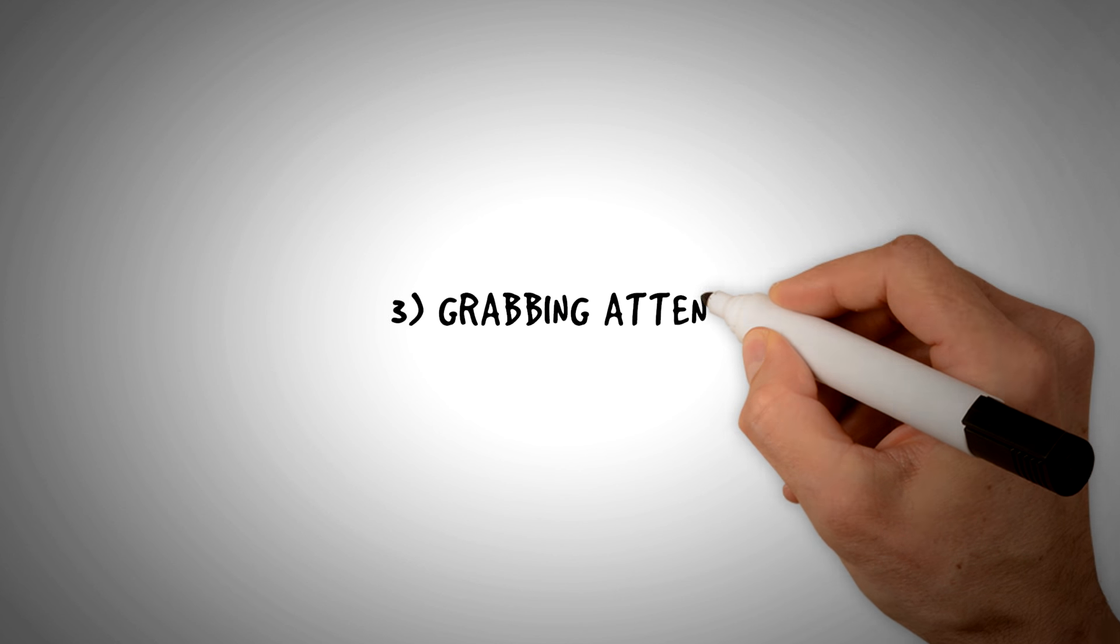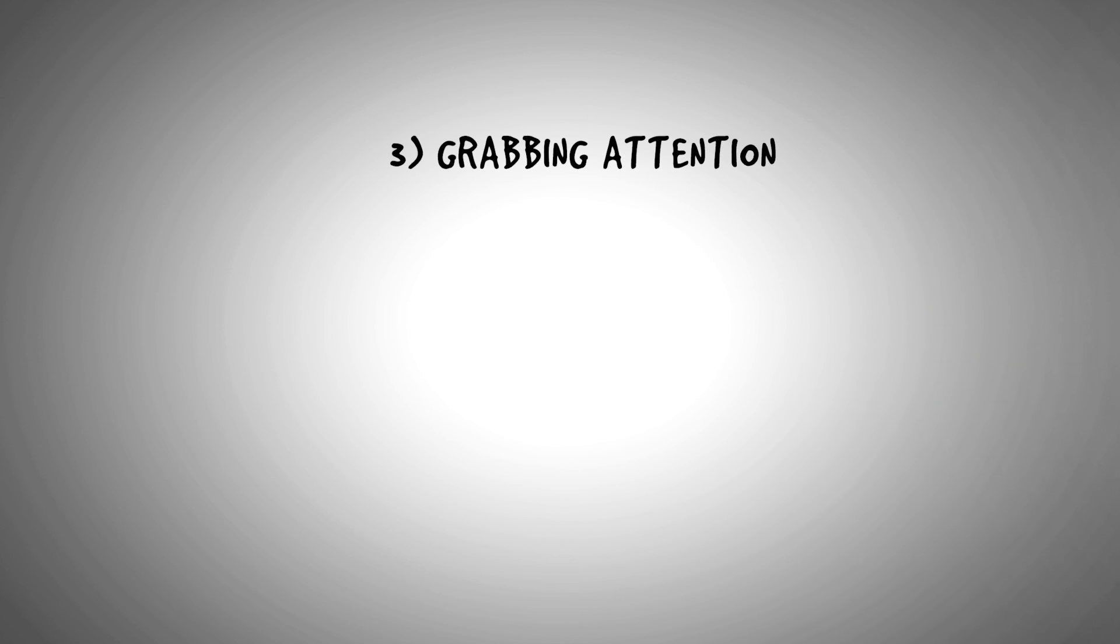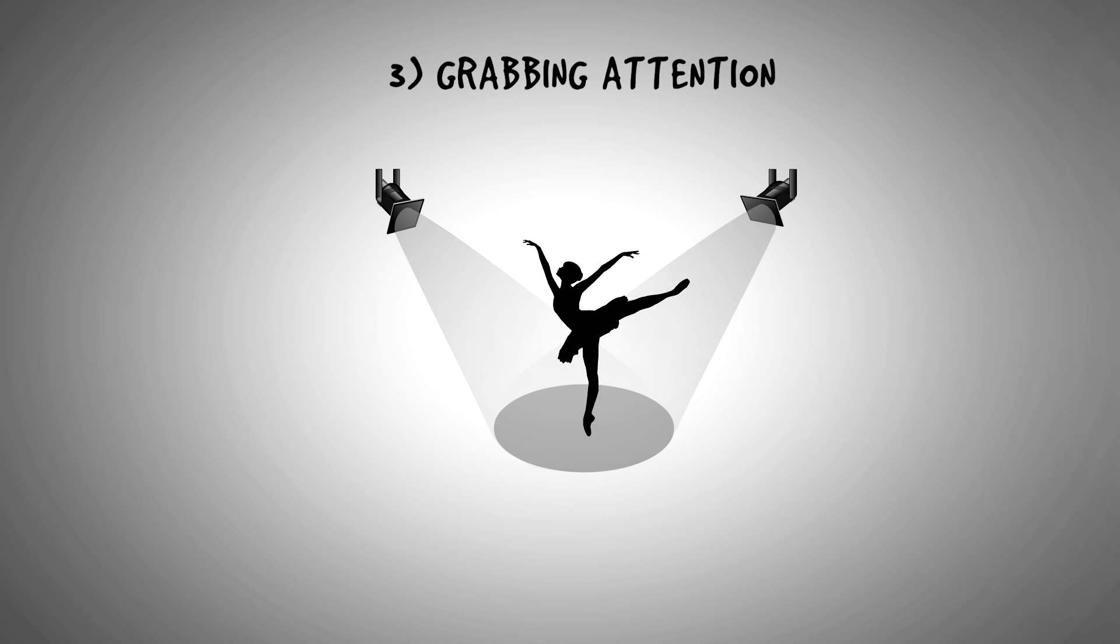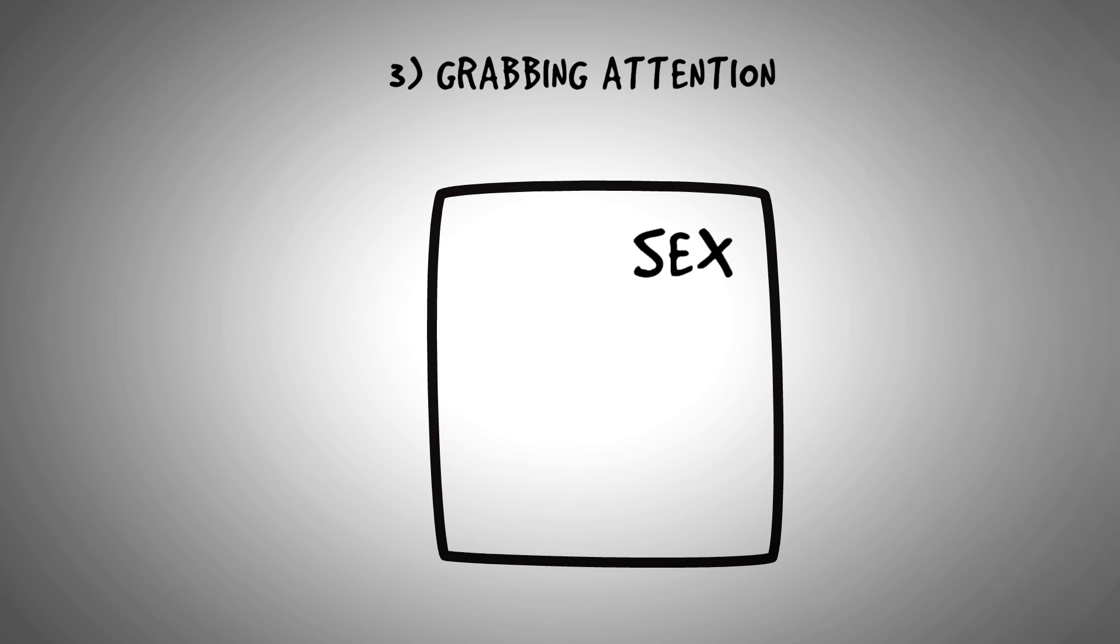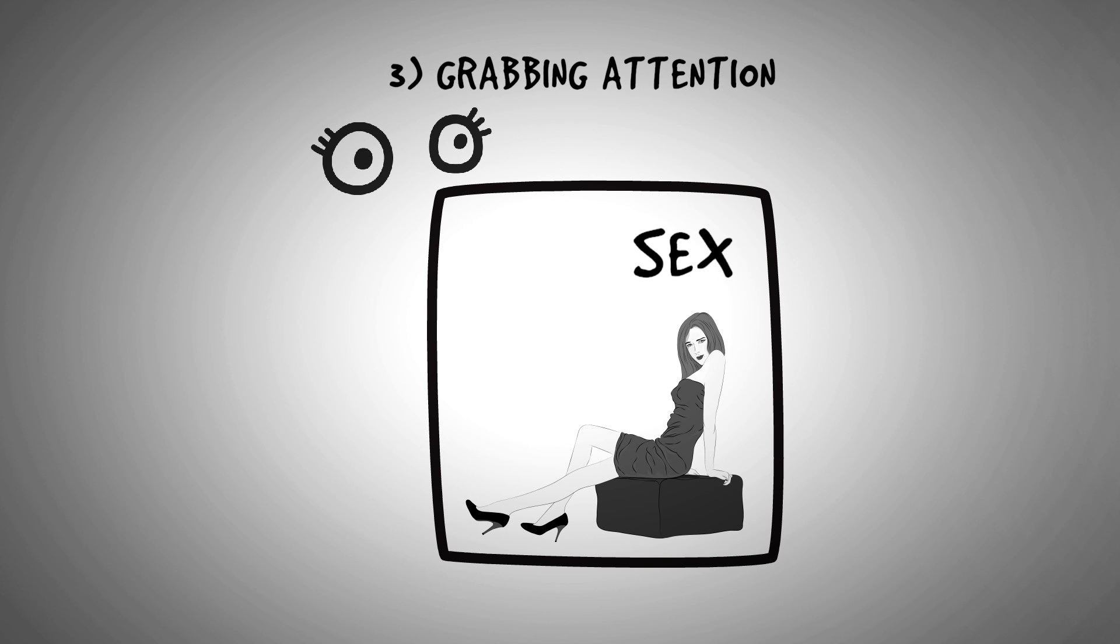Number three is grabbing attention. Before you can direct someone's attention, you first need to be able to grab it. And how do you do that? Using the time-tested attention grabbers of all time. Number one is sex. The main reason you see so many models on magazine covers and in advertisements. Attractive people make you look. And while you're looking, you also notice the headline, the product, and everything else.